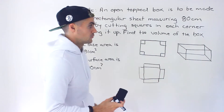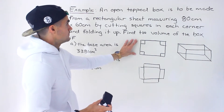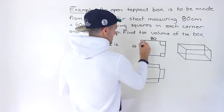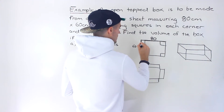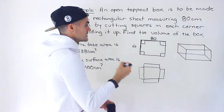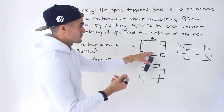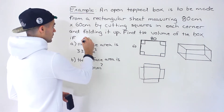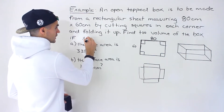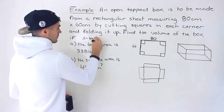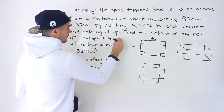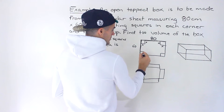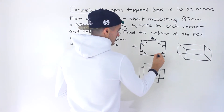Initially we have this rectangular sheet, which measures in this particular case 80 centimeters by 60 centimeters. So this entire length is 80, this entire width is 60. We're going to be cutting out the squares from each corner. We don't know what the length of the squares are, so we can introduce a variable. I'm going to let x equal the width or the length of the squares that we are cutting out. Each square is going to be x by x at every corner.